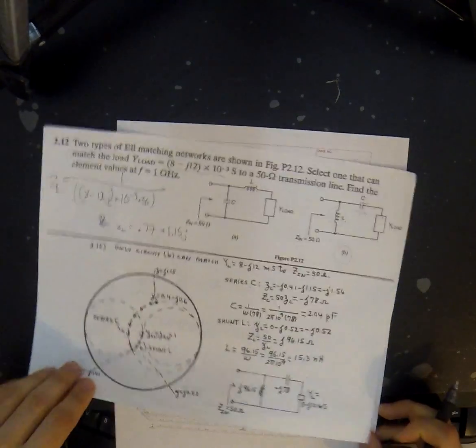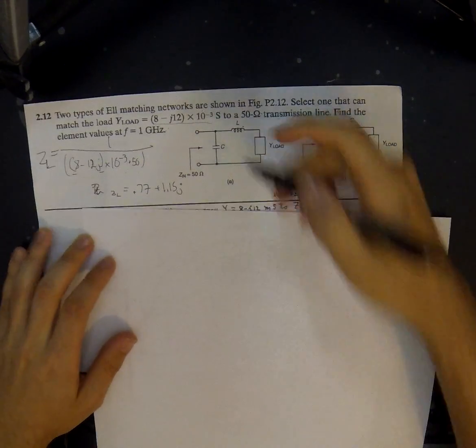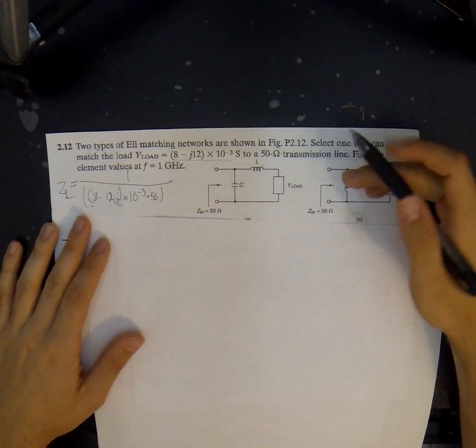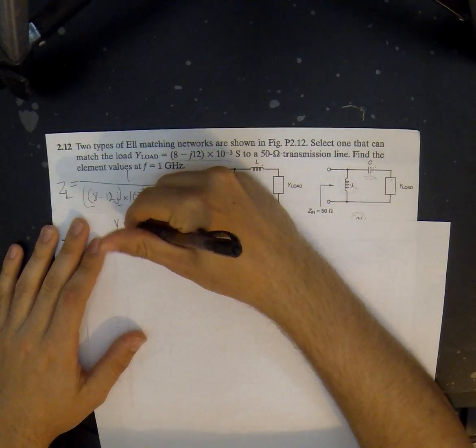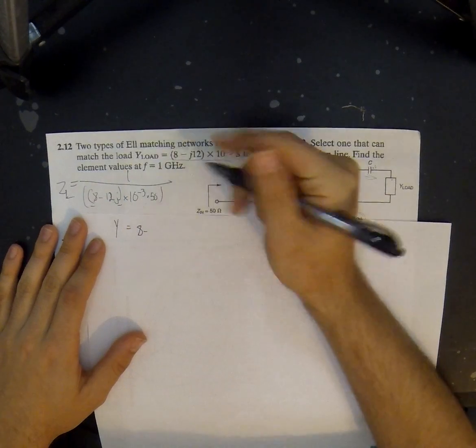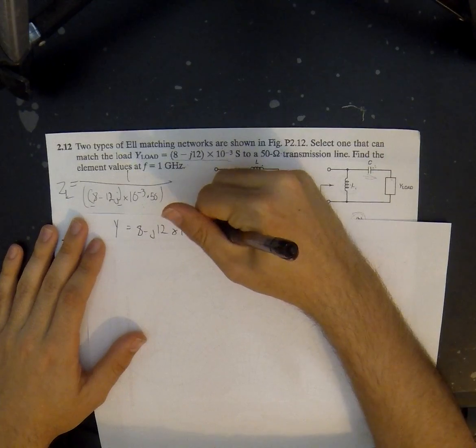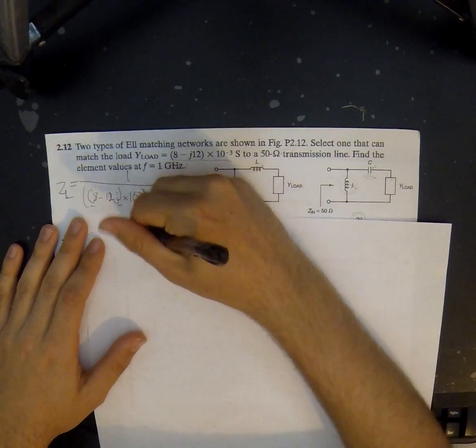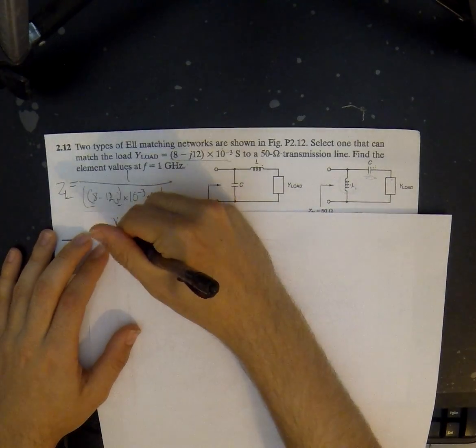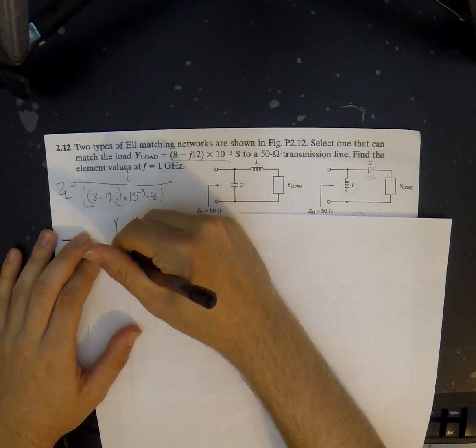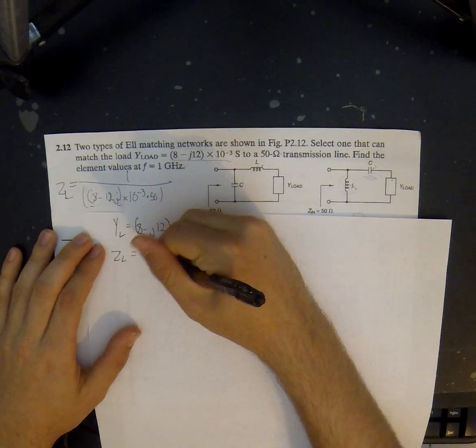So let's first convert our load from an admittance to an impedance. We know Y equals 8 minus j12 times 10 to the negative third Siemens. Don't forget to put your parentheses around there when you're typing this in your calculator. Your impedance now is Z sub L, which equals 1 over Y sub L.